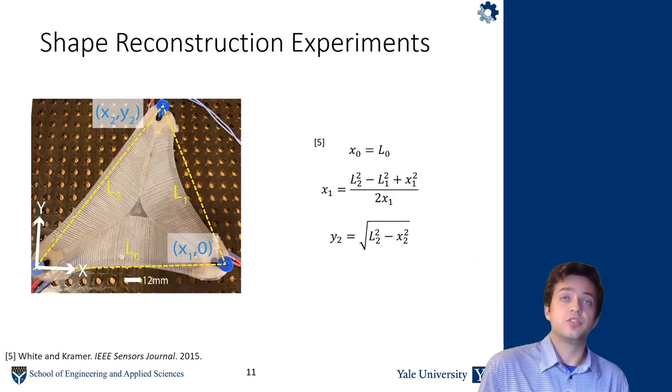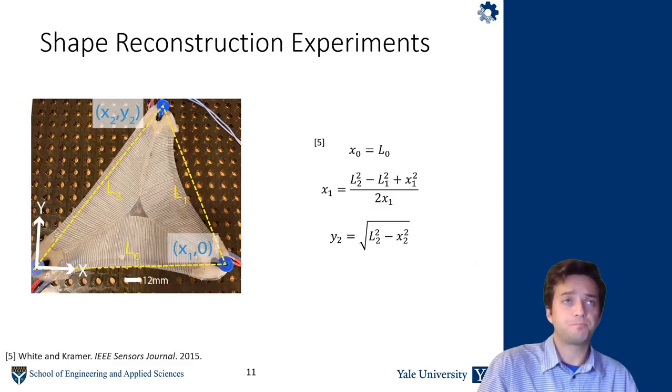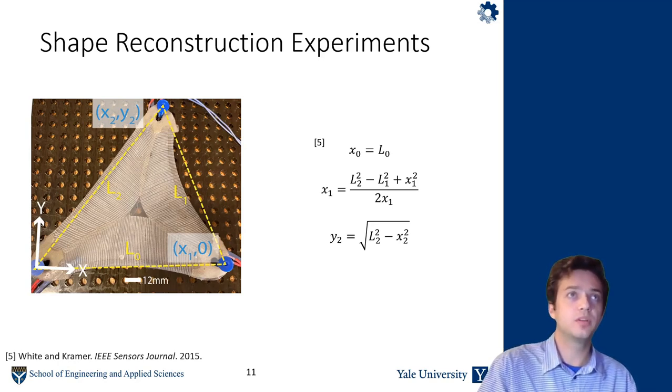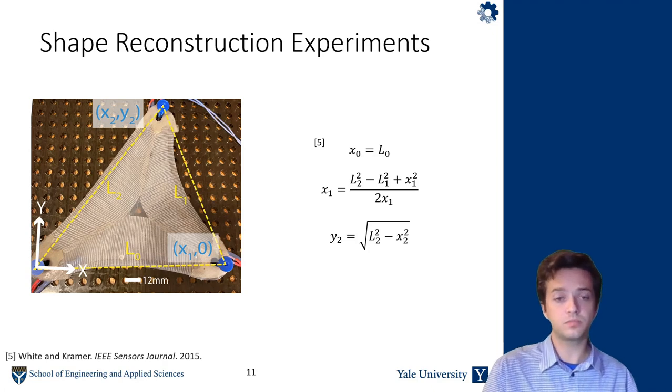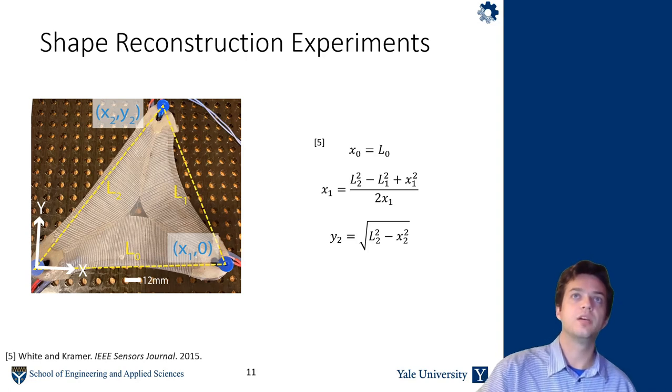So we could finally use the sensors to do shape reconstruction experiments. Here's our experimental setup with one of the skins placed on a pegboard. There is 12 millimeters of space between each peg, so we know where the vertices of the triangle are. We can measure L0, L1, and L2, the lengths of the sides of the triangle by measuring the capacitance of the sensor, and then using the linear model we came up with during calibration on the right. Then we can follow experimental procedure from previous work and reconstruct the vertex locations of the triangle knowing the side lengths.